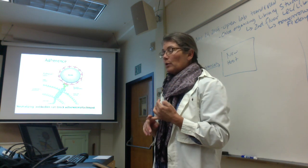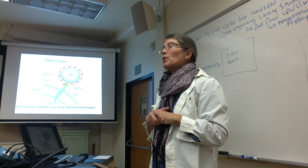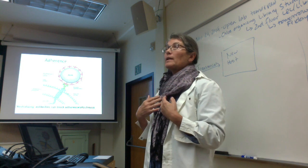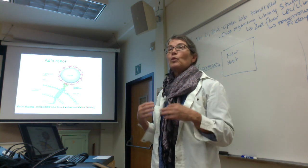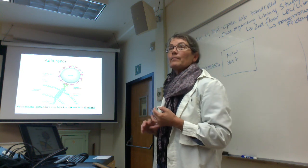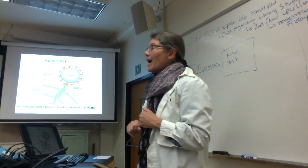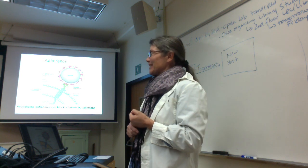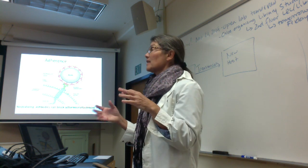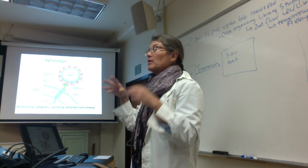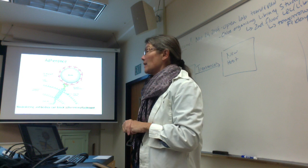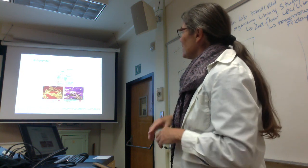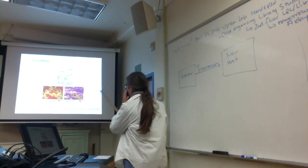If we could block the adhesins from binding to the receptors, we could block attachment and thus block colonization and infection. Our bodies have evolved to block attachment by making neutralizing antibodies — antibodies that block attachment, usually by binding to the adhesins. So what we ideally want is to make antibodies against the adhesins; the antibodies bind to the adhesins and block attachment. This slide shows colored electron micrographs of bacteria in the process of attaching.